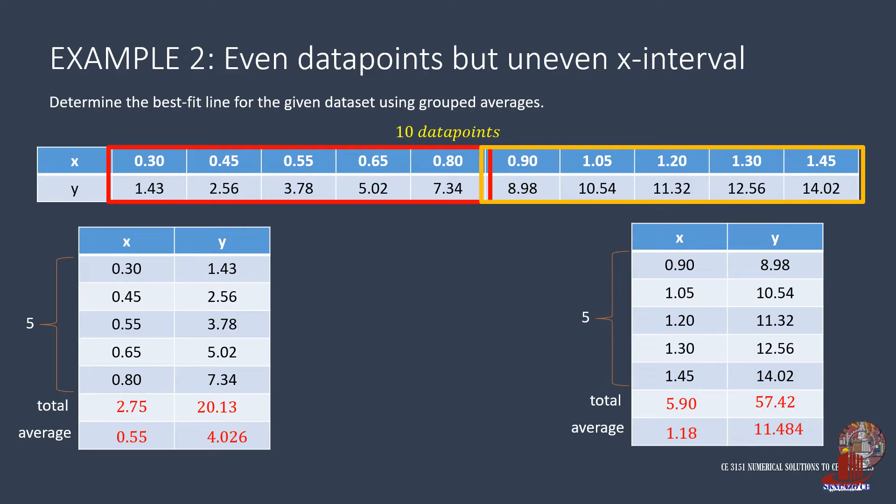Knowing the two pairs of averages gives the two linear equations. From the first group, the first equation is 4.026 as equal to 0.55a plus b. For the second group, the second equation is then 11.484 as equal to 1.18a plus b.